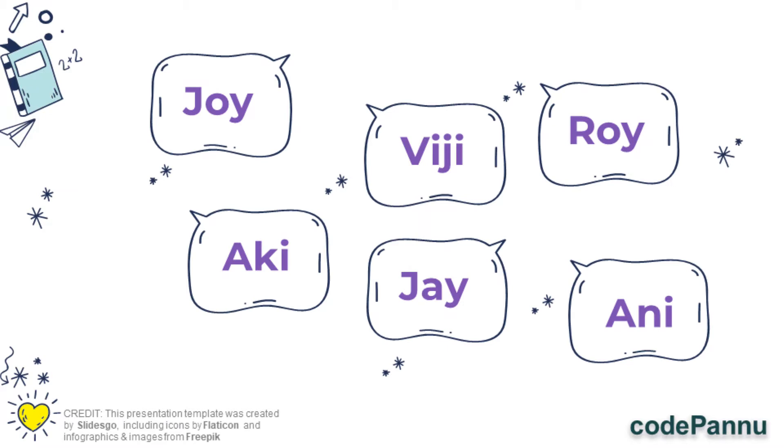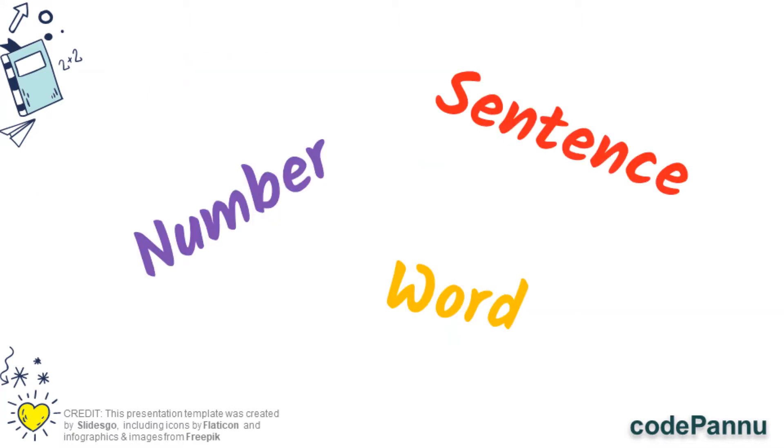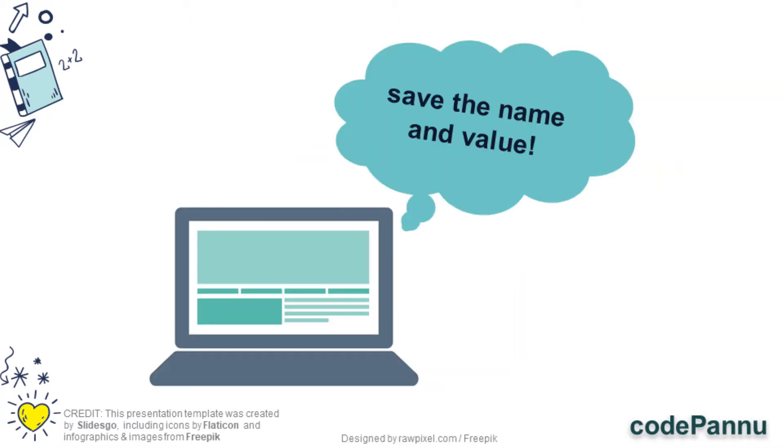Just like that, if you want Python to remember a number or a word or a sentence, you can give a name for it. Python will save the name and the value in the computer memory and remember it. This is called a variable.